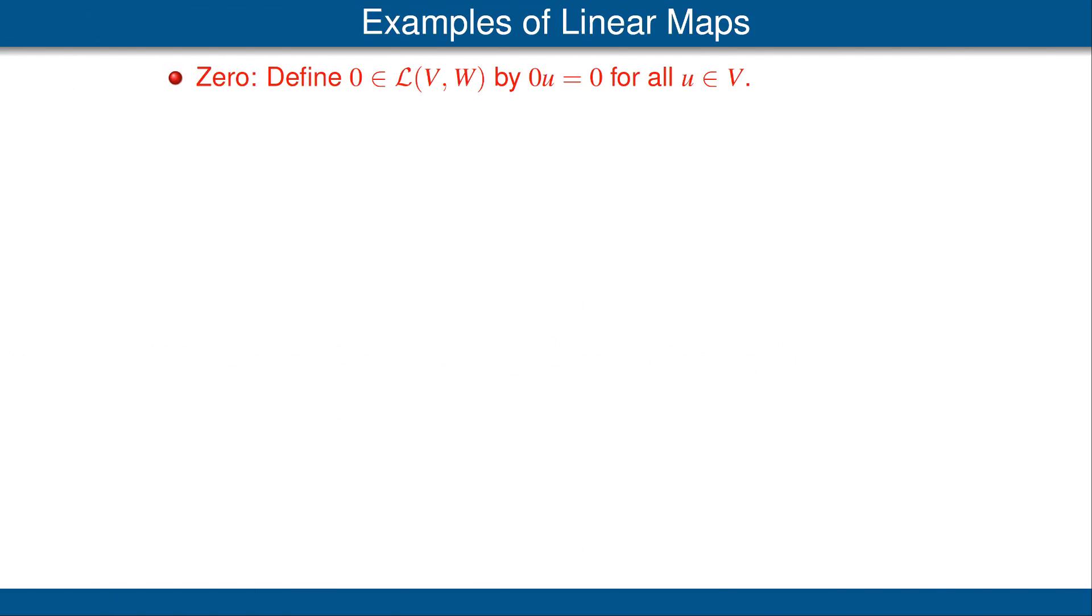Let's look at some examples. The simplest linear map is called 0. This is the linear map from V to W that sends every vector u in V to the vector 0 in W. We call this linear map 0, so this is yet another use of the symbol 0. Here we see the key equation 0 applied to u is 0. The 0 on the right is the 0 vector in W, in other words, the additive identity in W. The 0 on the left of this equation means the linear map from V to W that takes every vector in V to 0.